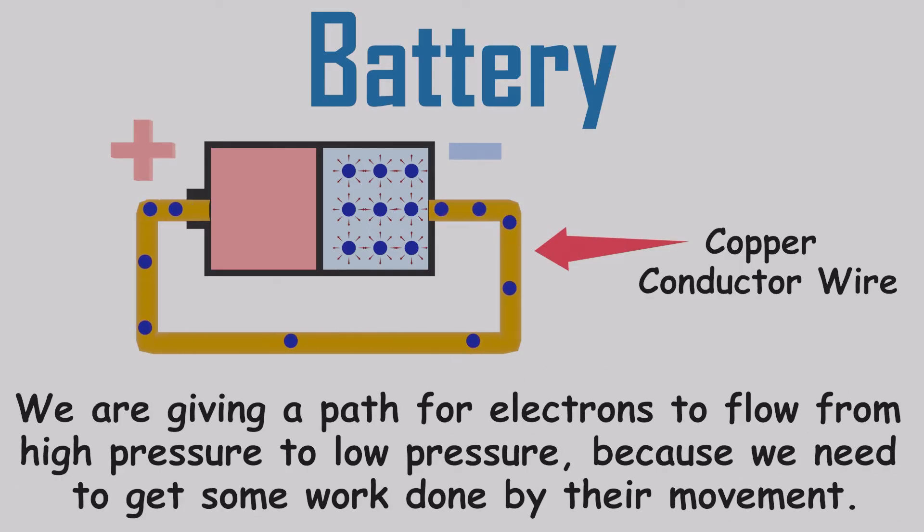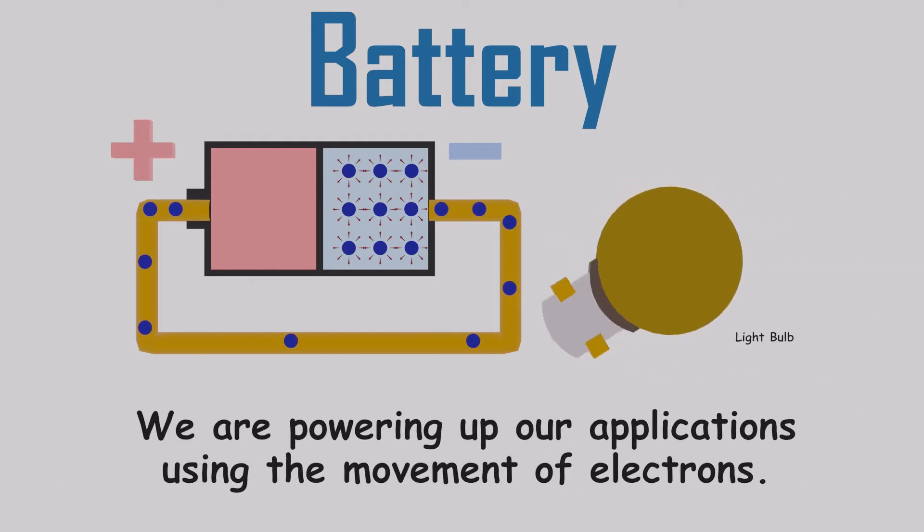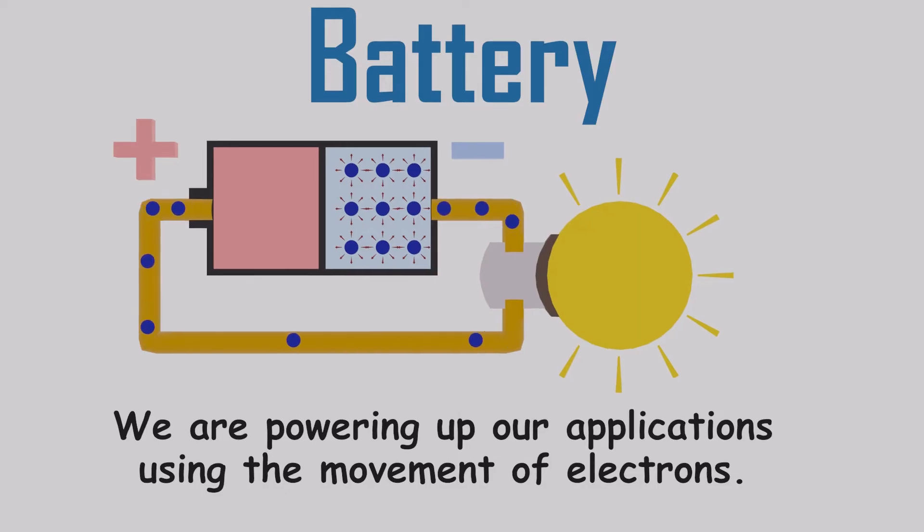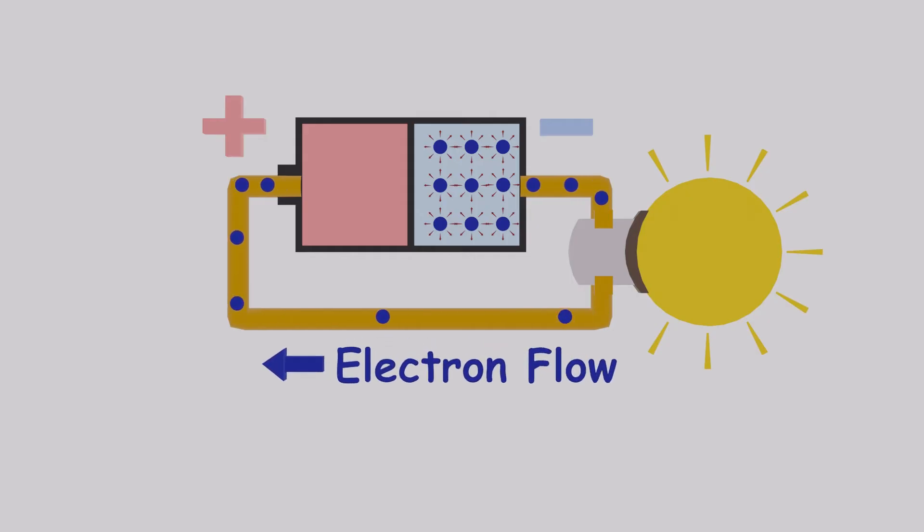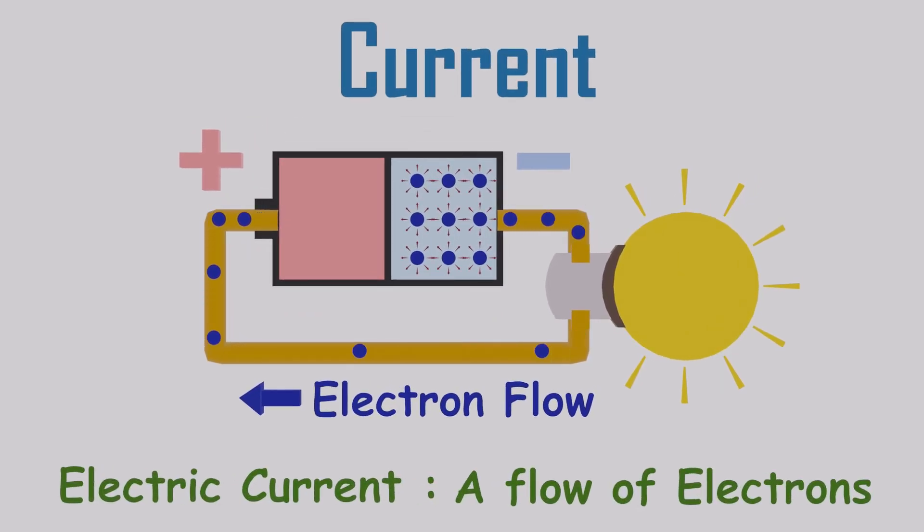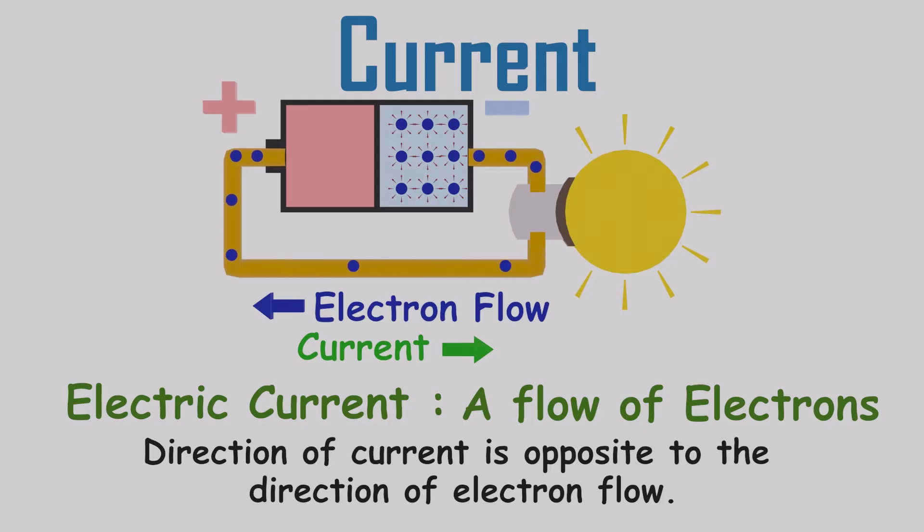So now the electrons are flowing in one direction from negative to positive. We are giving a path for electrons to flow from high pressure to low pressure because we need to get some work done by their movement. Each of our electric appliances works based on these concepts. When electrons move in one direction, we call it electric current. But there's something funny: we say the current goes in the opposite direction of the electrons. It's just a rule we follow even though it might seem a bit strange.